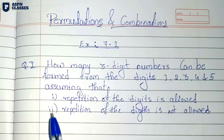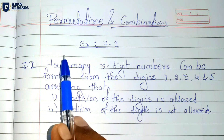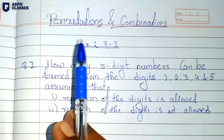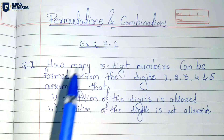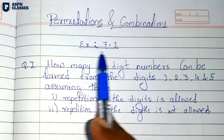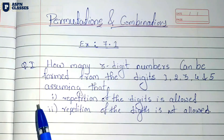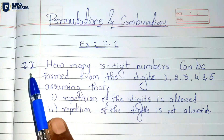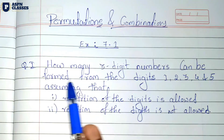Hi students, welcome to the ASPEN classes. This is the QC First Year Permutation and Combination chapter, Exercise 7.1. This is the first question.